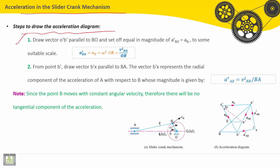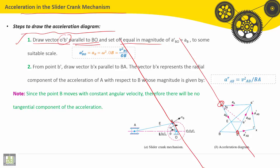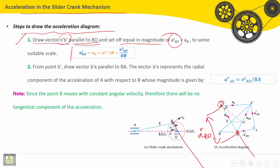We'll start by the first step. We have to draw the vector O-B dash parallel to BO. O-B dash should be parallel to BO, and set off equal in magnitude to ARBO. The magnitude is equal to ARBO, found from this formula, and drawn in some suitable scale.